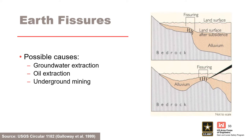Earth fissures occur where ground subsidence causes differential settlements. Possible causes include groundwater extraction, oil extraction, and underground mining. Earth fissures can be along the edges of the subsidence area, or where the thickness of the soil deposits varies.